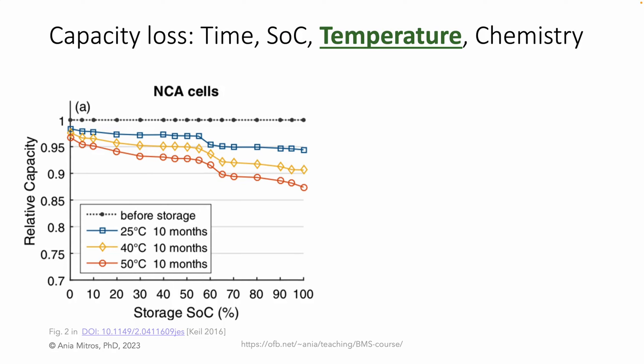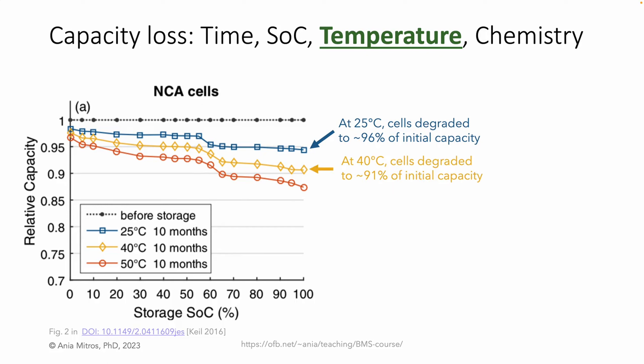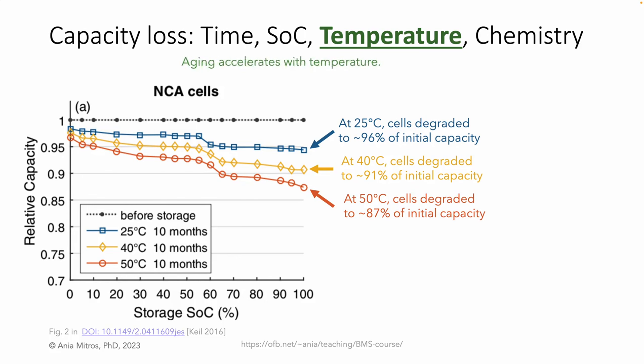Now let's look at the impact of temperature on aging. We can see that cell capacity degrades faster at hotter temperatures. At 25°C — room temperature — these cells degraded to 96% of their initial capacity. At 40°C to 91%, and at 50°C to 87%. Aging accelerates with temperature.